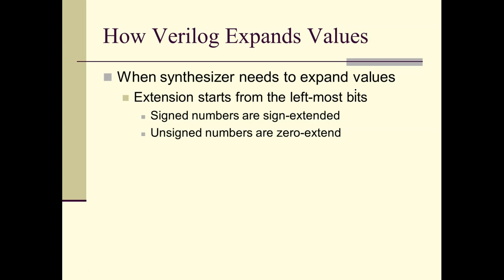The synthesizer is going to need to expand values by adding bits to the left-hand side of the value. So if you have a 10-bit value and you add four bits to it, those bits are added on the left side, not the right. The way it adds these values is according to the signedness of that number. If that number is a signed number, it's going to sign-extend it, which means it replicates the sign bit. If you're dealing with unsigned numbers, it's going to zero-extend it — those extra bits are just made zero.